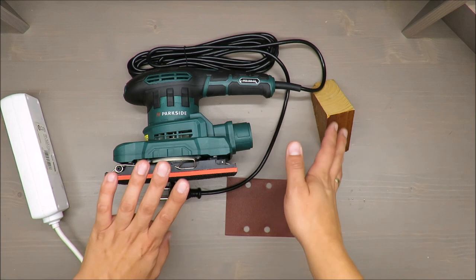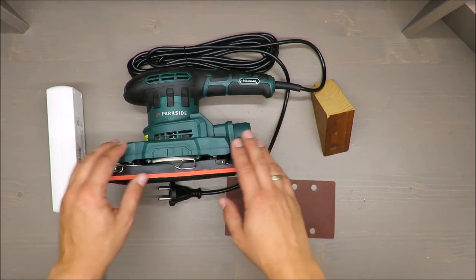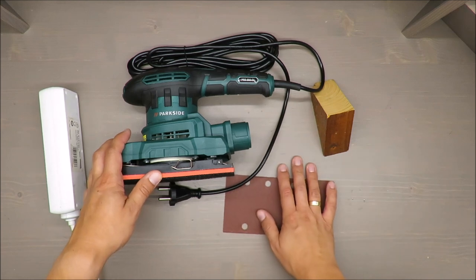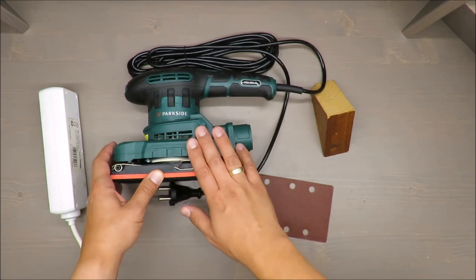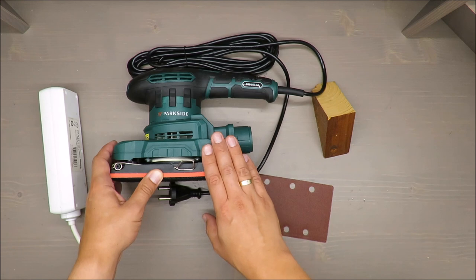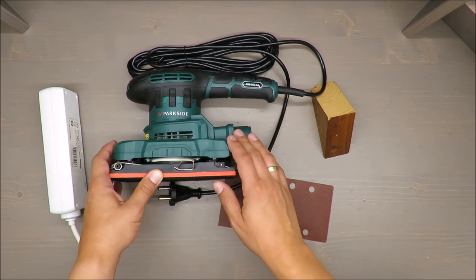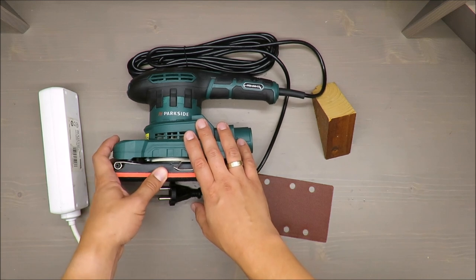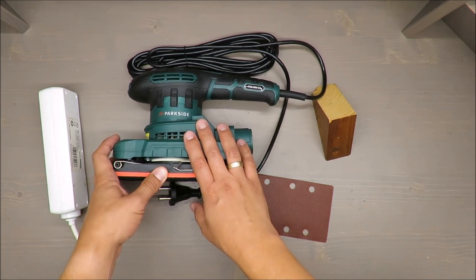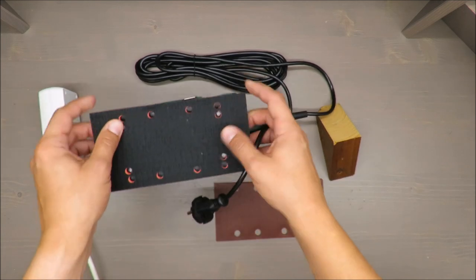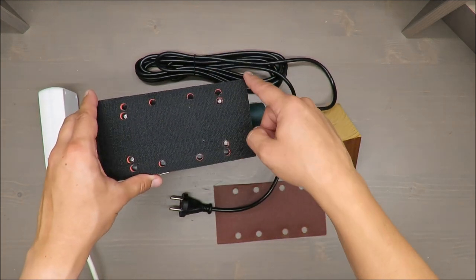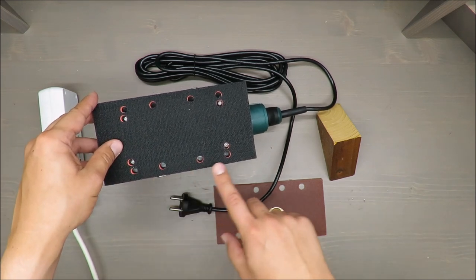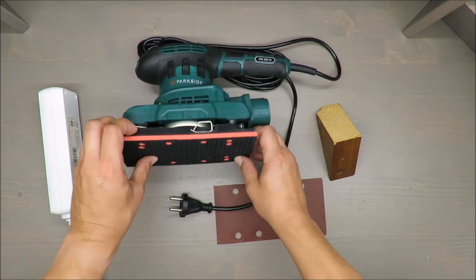Second, some basic features: power consumption 250 watts, no load frequency from 14,000 up to 24,000 OPMs, dimension of sanding plate 92 by 182 millimeters.